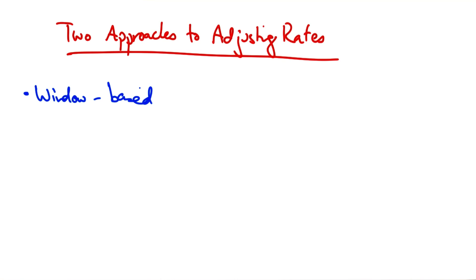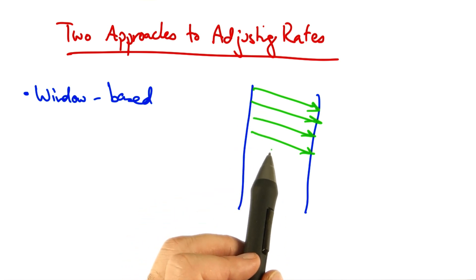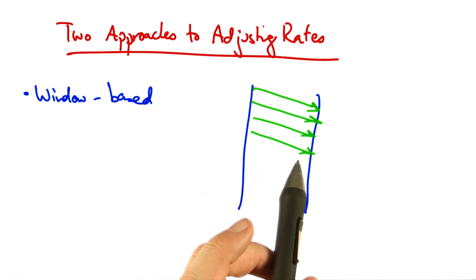One approach is a window-based algorithm. In this approach, a sender can only have a certain number of packets outstanding, or in flight.